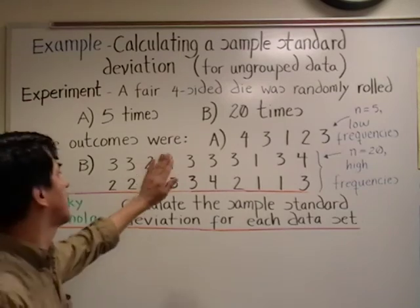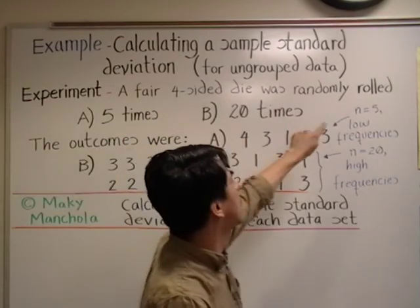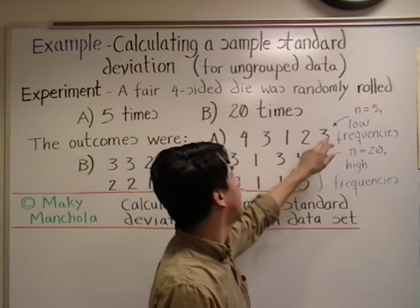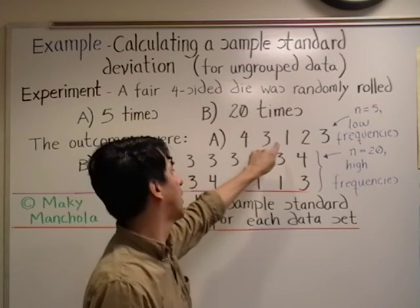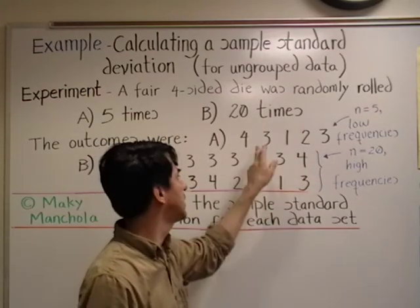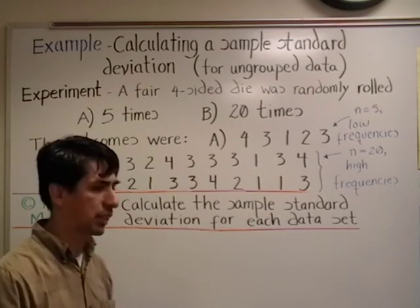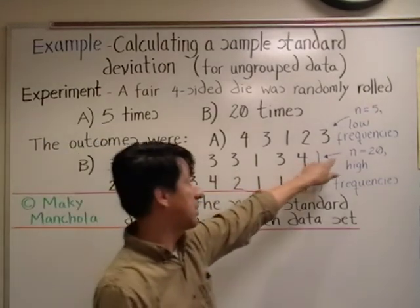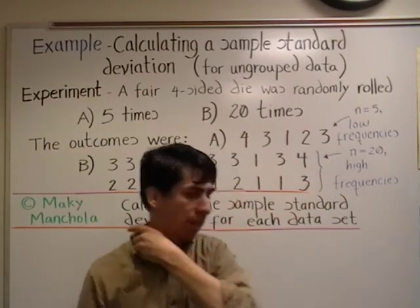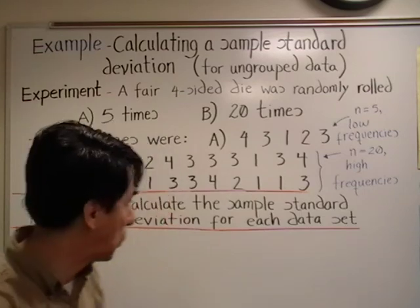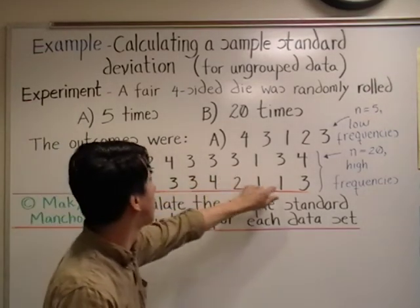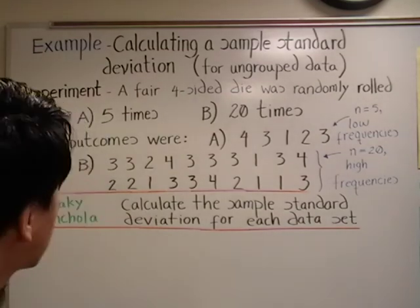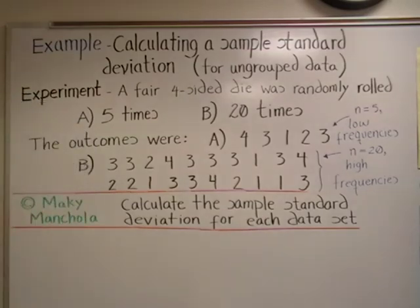Some observations. First, in data set A, we should observe that there are five data values, so the sample size is five. The frequencies are low: one occurred once, two occurred once, three occurred two times, and four occurred once. In data set B, the sample size is 20 and the data have high frequencies. Note that one occurred four times, two also occurred four times, three occurred nine times, and four occurred three times.